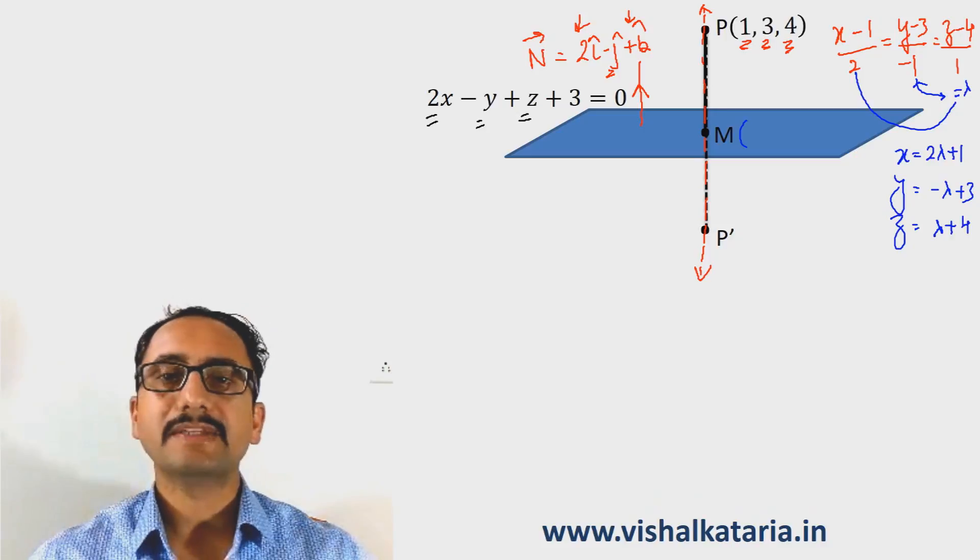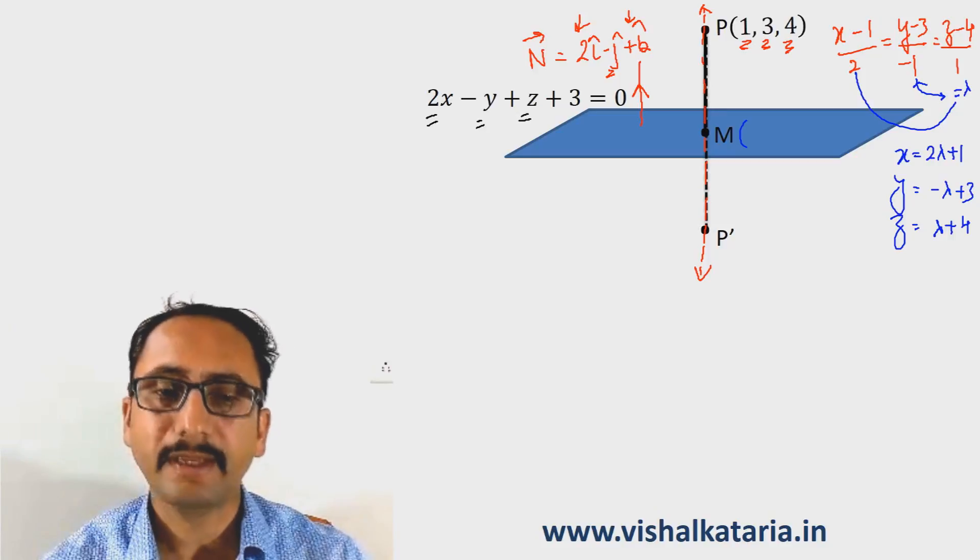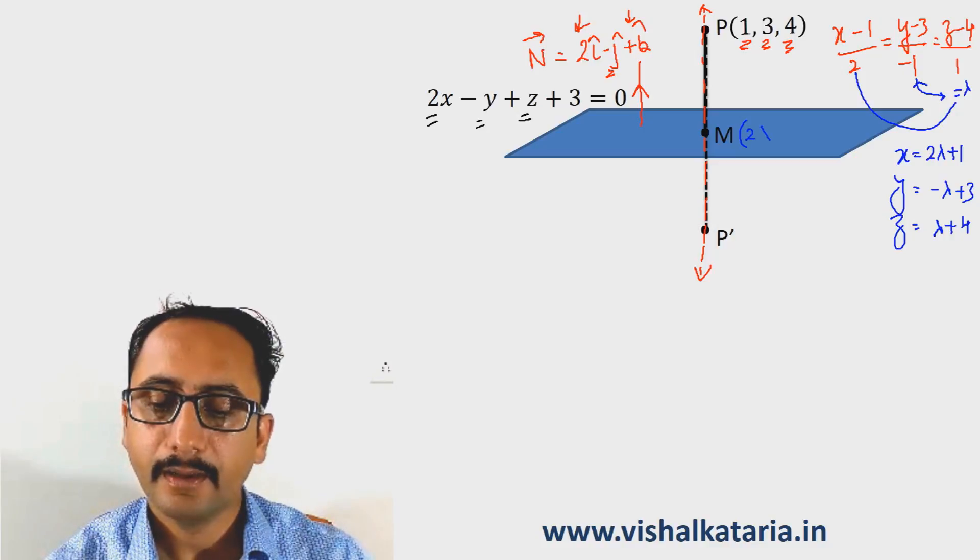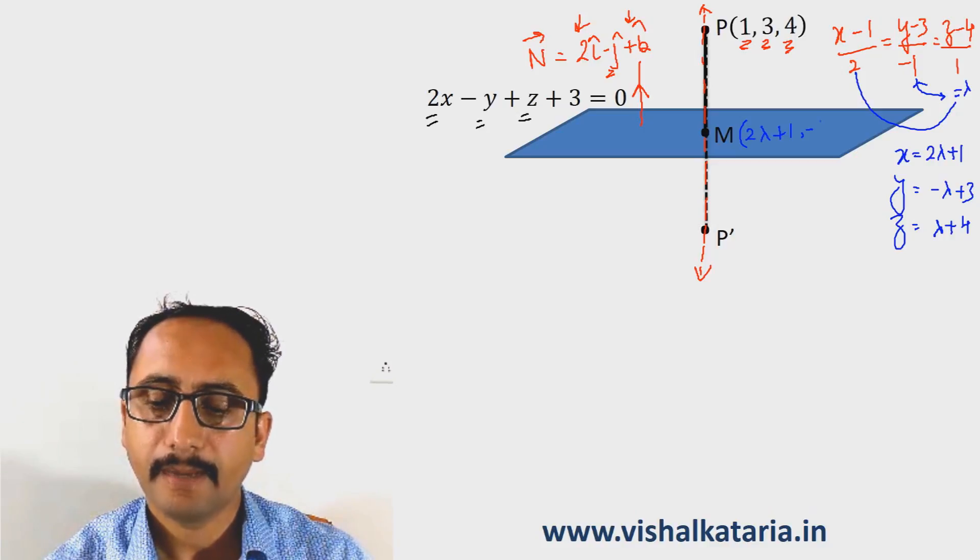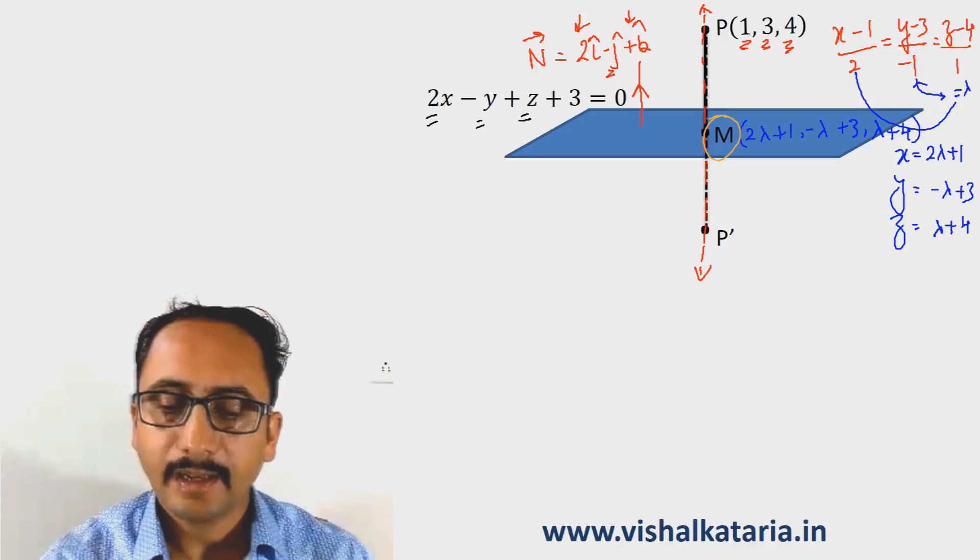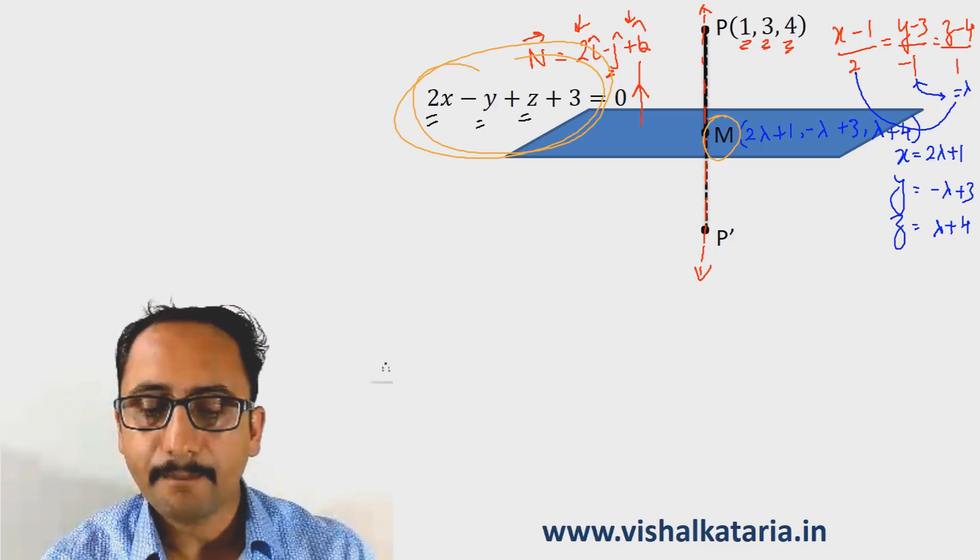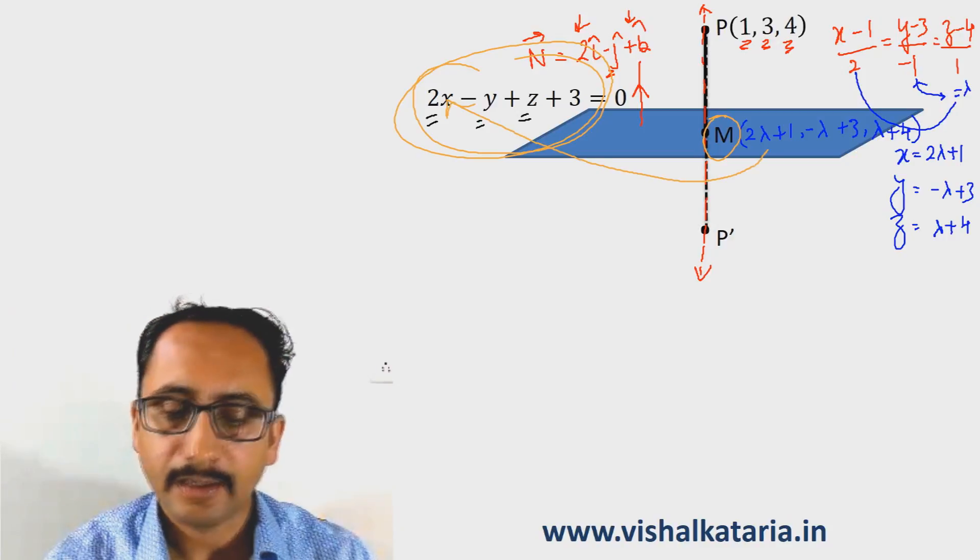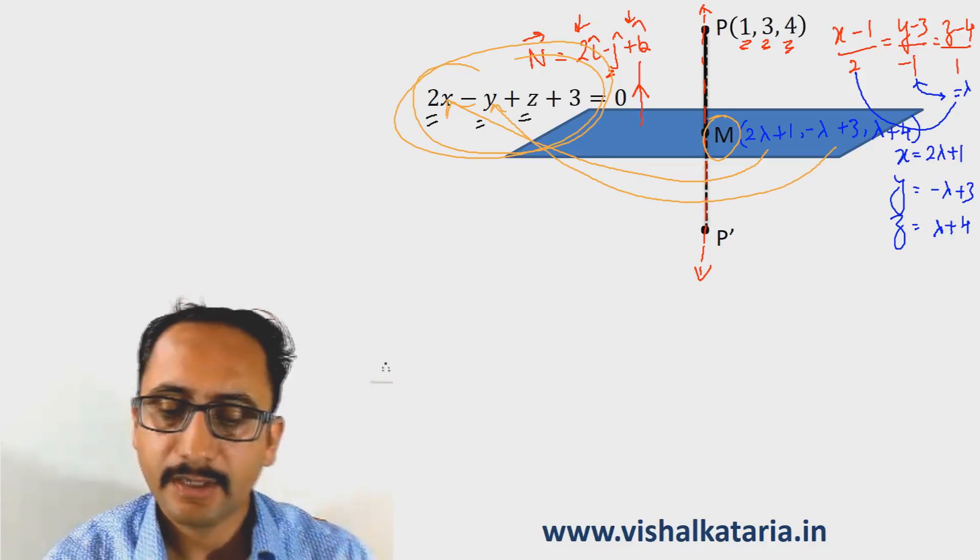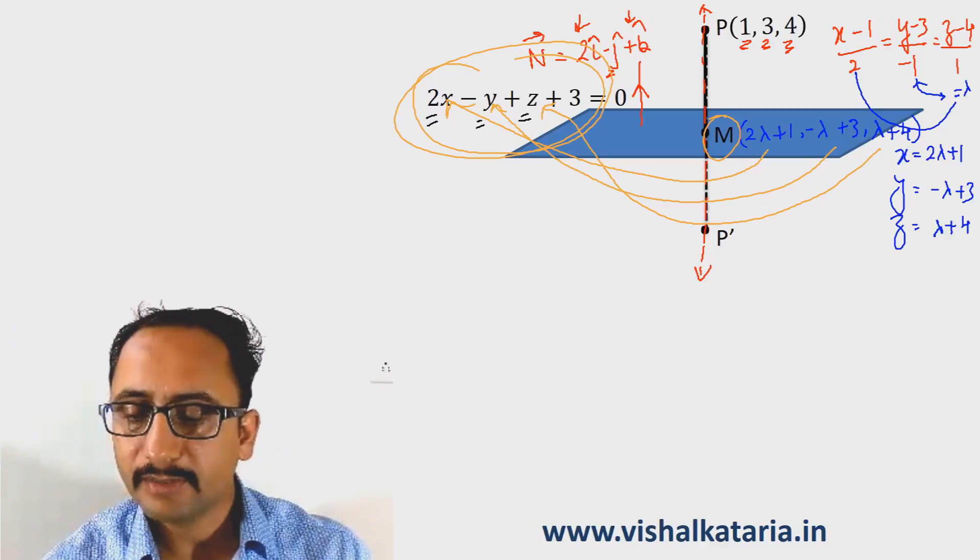Point M must satisfy this equation as it lies on this line. So point M is (2λ + 1, -λ + 3, λ + 4). We also know that point M lies on the given plane, hence M must satisfy the equation of the plane. The x, y, and z coordinates must satisfy the equation of the plane.